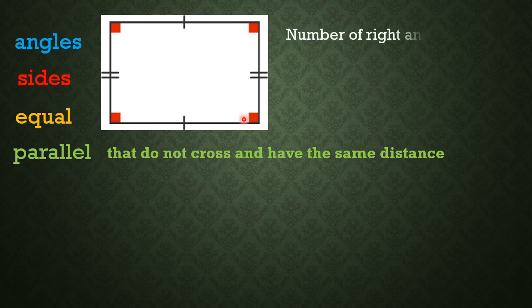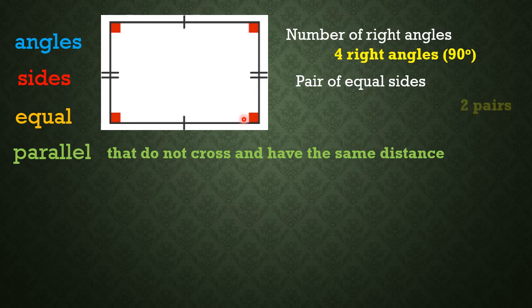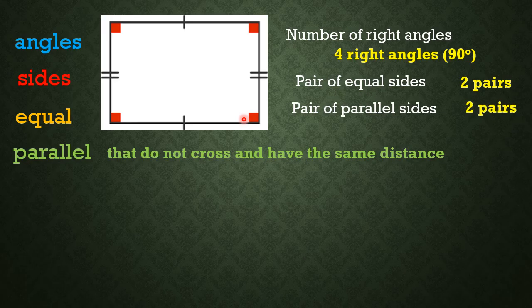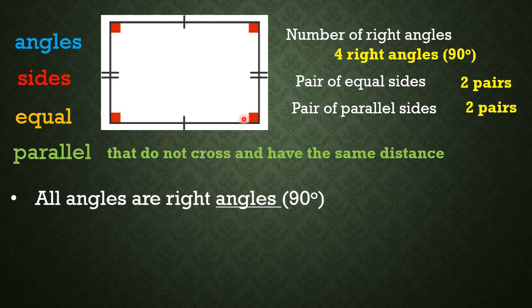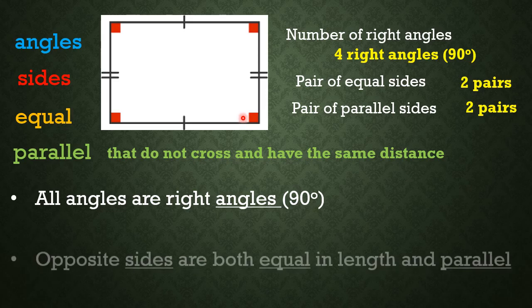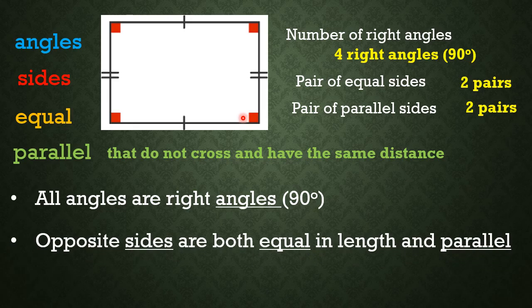So in a rectangle, it has four right angles. It has two pairs of equal sides and two pairs of parallel sides. To sum up, in a rectangle, all angles are right angles, and opposite sides are both equal in length and also parallel.